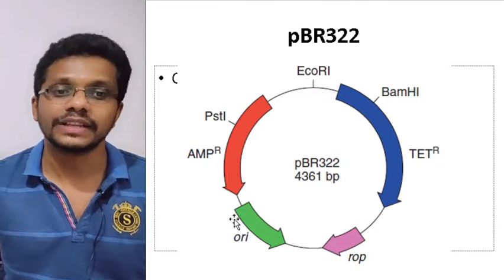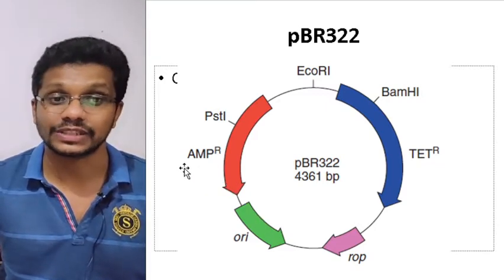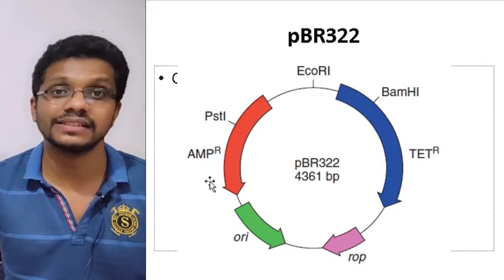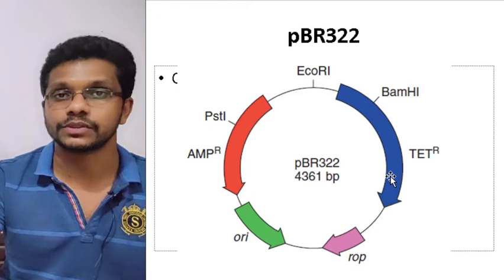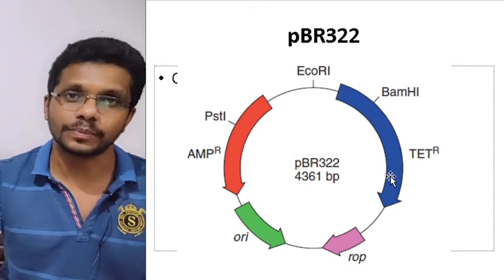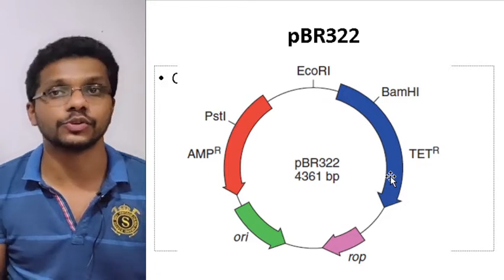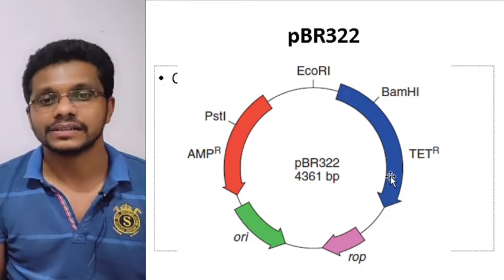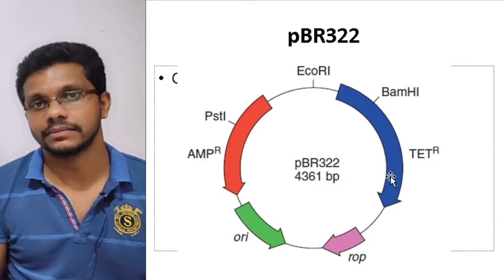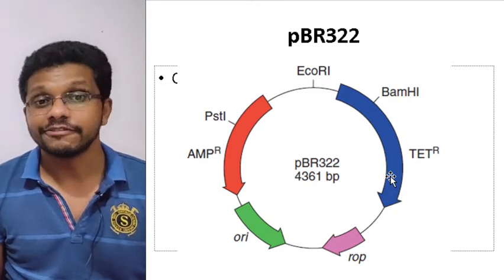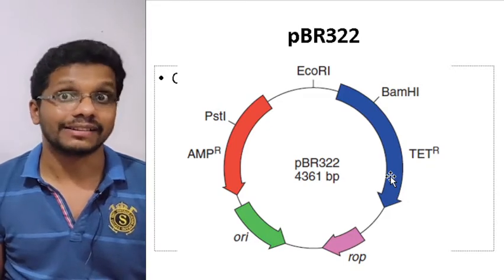We have two different selection markers — selectable markers including the ampicillin-resistant gene and the tetracycline-resistant gene. This vector is commonly used for Escherichia coli. Normally, E. coli is sensitive to ampicillin, meaning if you add ampicillin to the medium, they will die. Same with tetracycline — it is an antibiotic, and if you add tetracycline to the medium, the cell will die. But if the bacteria has this particular plasmid, they are resistant.